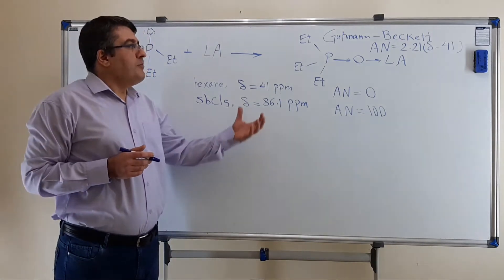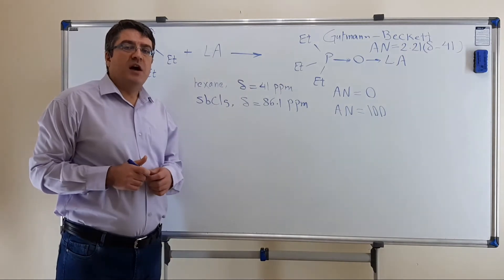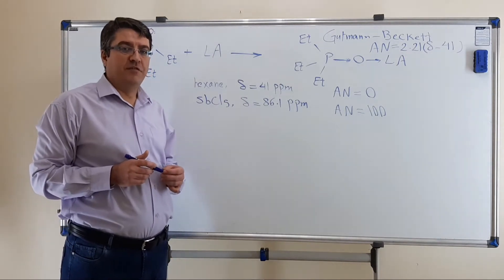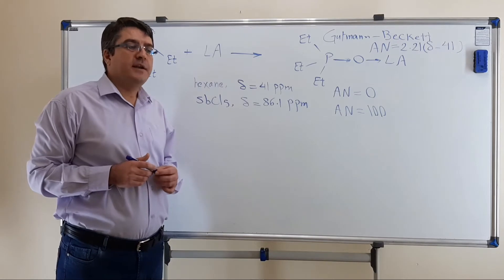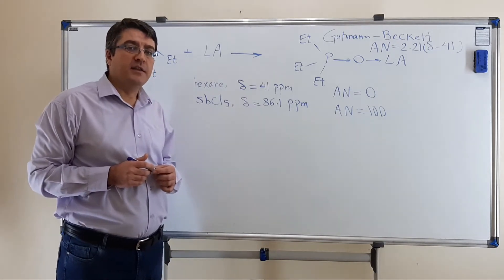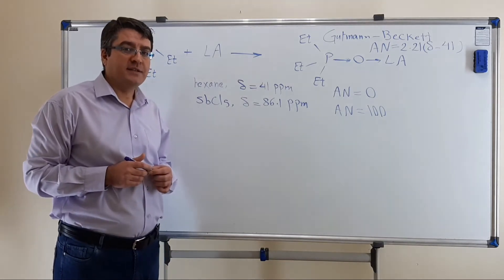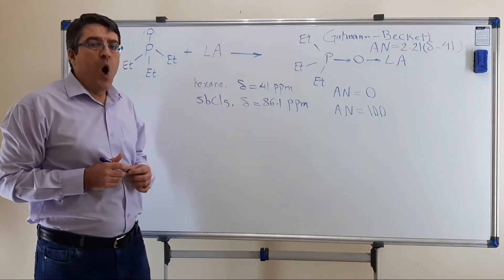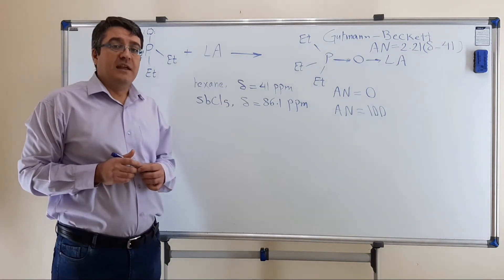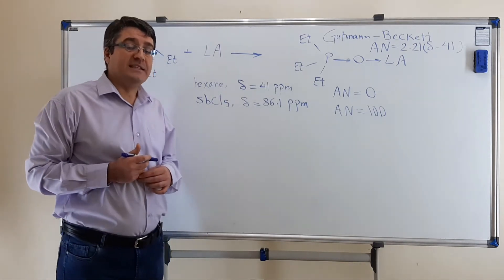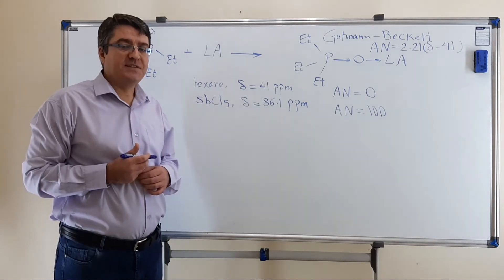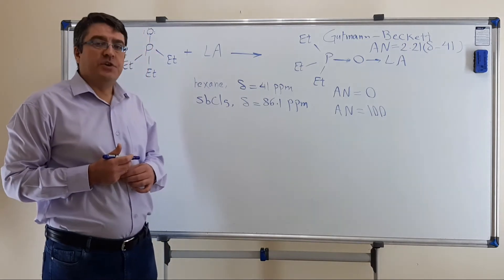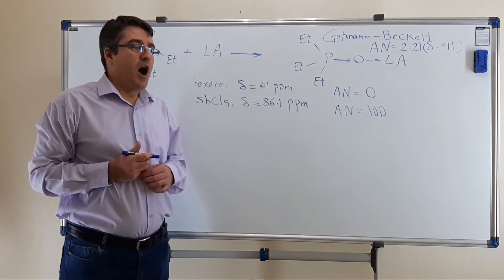The Gutmann-Beckett acceptor number was proposed by Gutmann in 1975 and later extended by Beckett in 1996. It was among the first attempts to quantitatively measure Lewis acidity. It is a solid scale, and in the literature its usage is common.